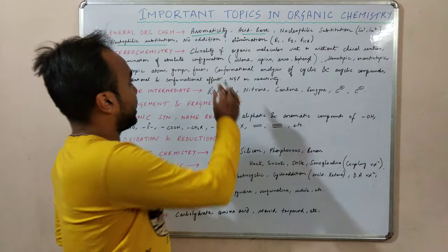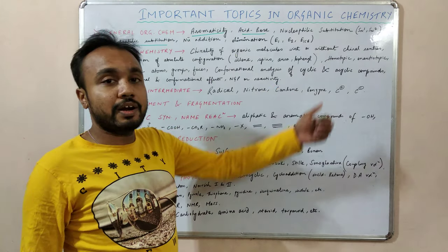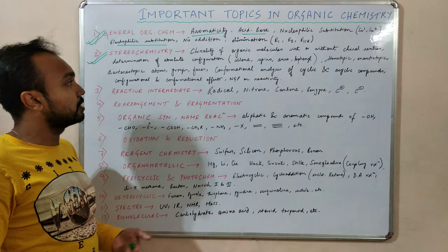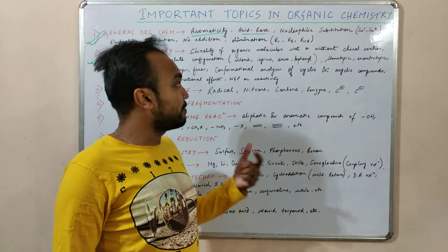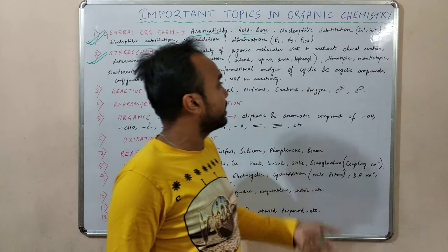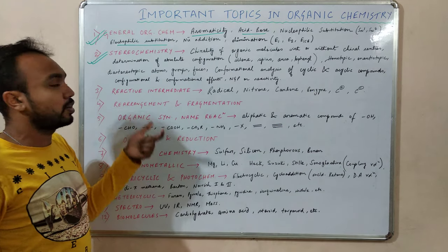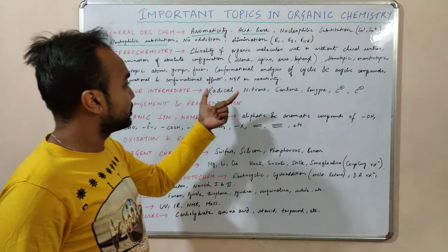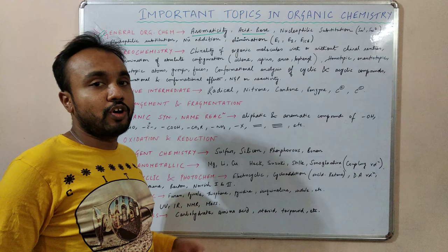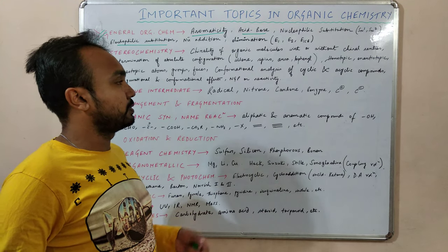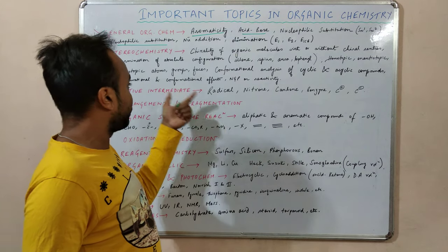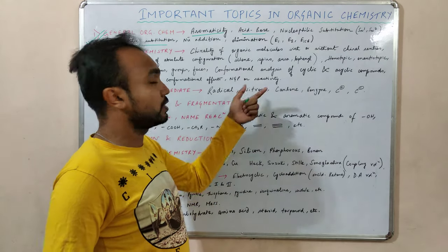Next we will talk about stereochemistry, which is very important in organic chemistry. In this topic we will discuss the chirality of organic molecules with or without chiral centers, determine the absolute configuration — RS configuration — of allenes, spiro, biphenyl, and ansa compounds, then homotopic, enantiotopic, and diastereotopic atoms, groups, and faces, and the conformational analysis of cyclic and acyclic systems, including conformational effects and neighboring group participation effects on reactivity.